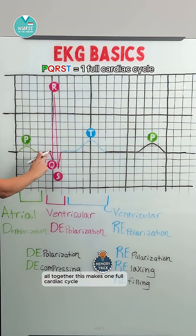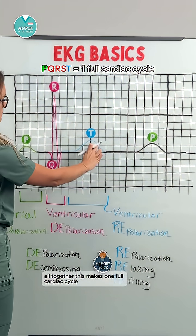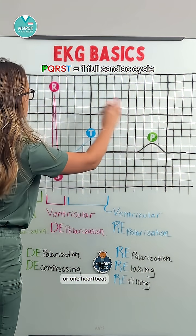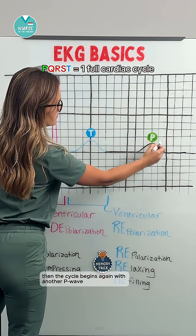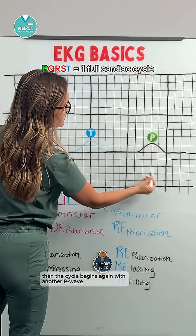All together, this makes one full cardiac cycle, or one heartbeat. Then the cycle begins again with another P wave.